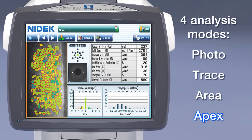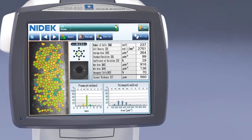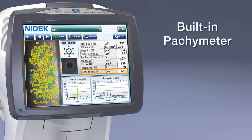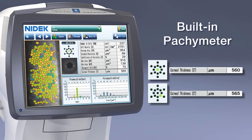The CEM530 provides a built-in specimeter, which measures corneal thickness at each of the central, paracentral, and peripheral points.